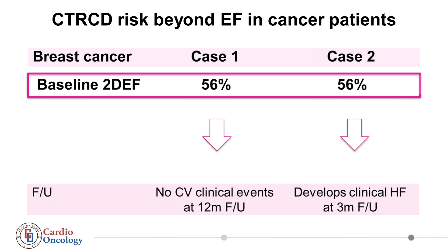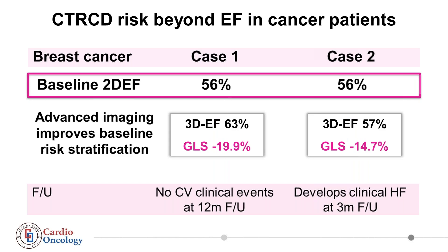Patient two developed heart failure symptoms early during cancer treatment. If we use advanced imaging, we can improve baseline risk stratification and reclassify the risk for future cardiovascular toxicities. When we detect a decrease in GLS at baseline, we know those patients are at increased risk of cardiovascular toxicity or heart failure during treatment with anthracyclines. However, 3D echo and GLS are not always available in daily practice, and these techniques have their own limitations regarding expertise and availability.